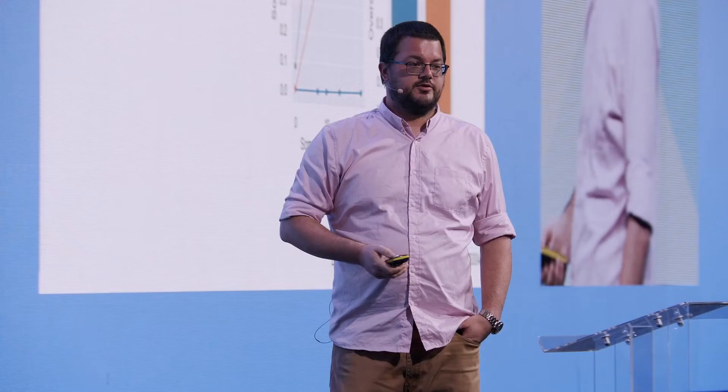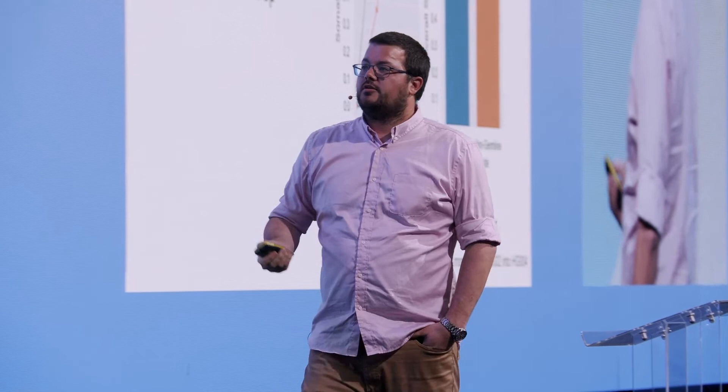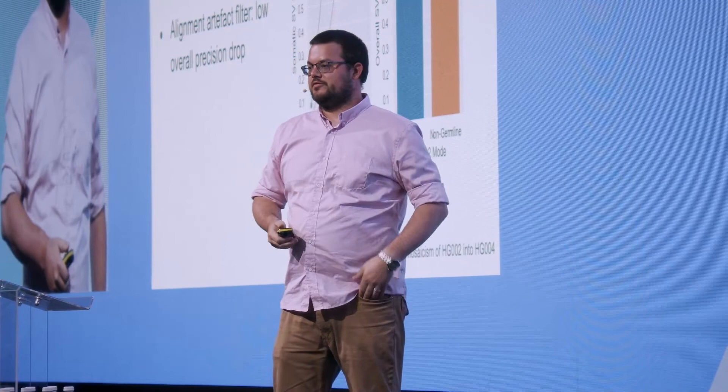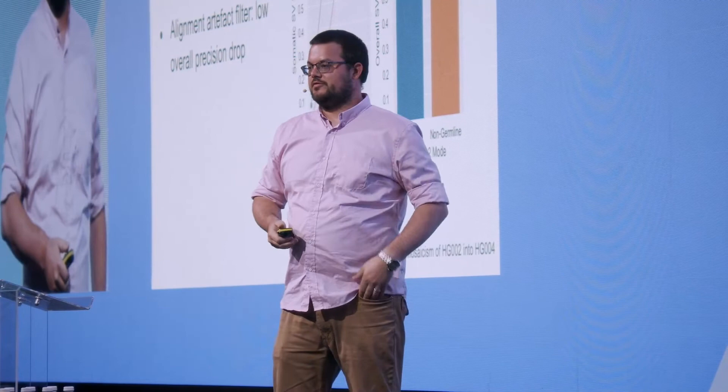The reason our recall is a little bit lower than the genotyping curve is that we wanted to keep up precision - it's easy to call everything but precision has to keep up. In blue you see the precision in our default germline mode, and in orange the precision of this mosaic mode. It's slightly reduced but overall pretty good.